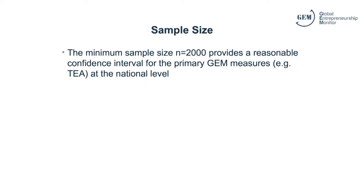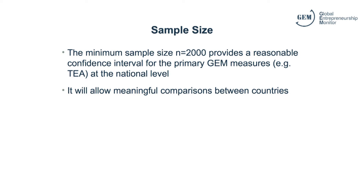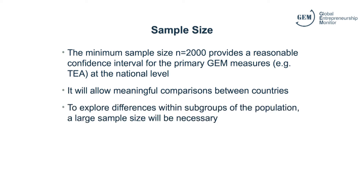The minimum sample size of 2,000 respondents provides a reasonable confidence interval for the primary GEM measures at the national level, and this allows for meaningful comparisons between countries. But when deciding on the appropriate size for your team, keep in mind that if you wish to explore differences within population subgroups, a larger sample will be necessary.